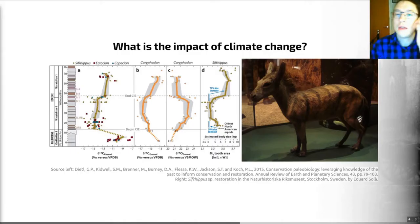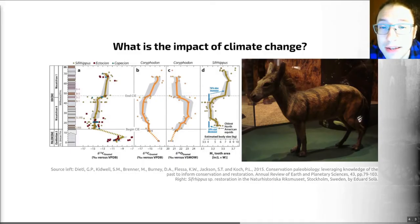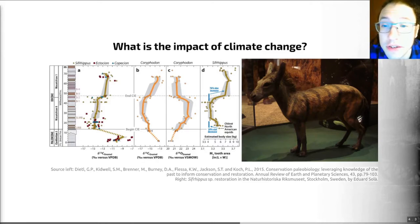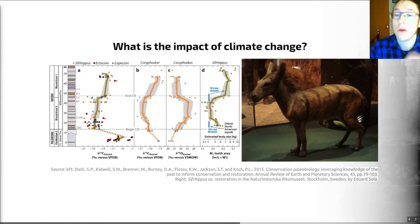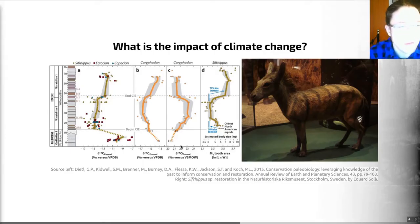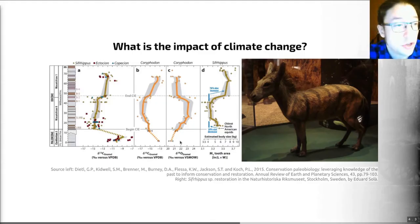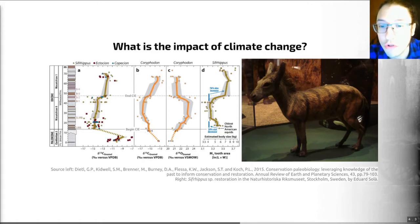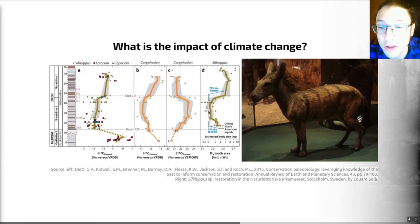My example here looks at the response of the mammal community to a thing called the Paleocene-Eocene Thermal Maximum, or the PETM — an event that happened 56 million years ago. It was a period of rapid global warming. This graph shows delta-18O, a proxy for temperature change in terms of mean annual temperature across this time period, and you can see that there was a big spike in temperature during the PETM.